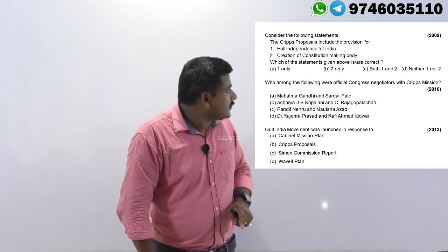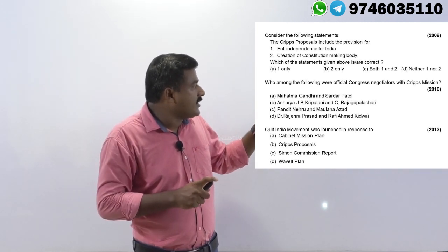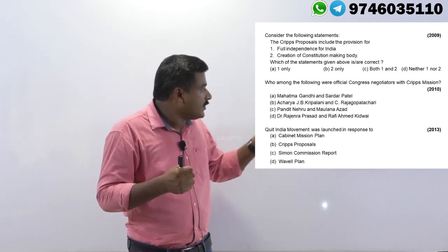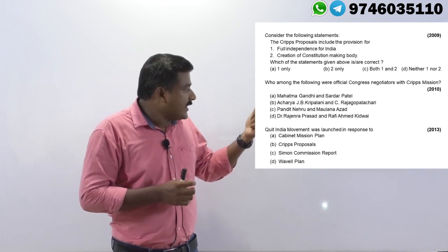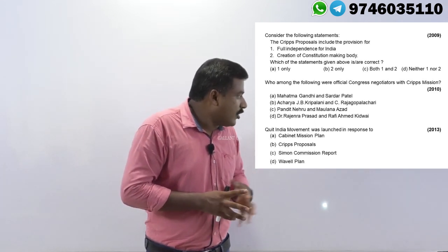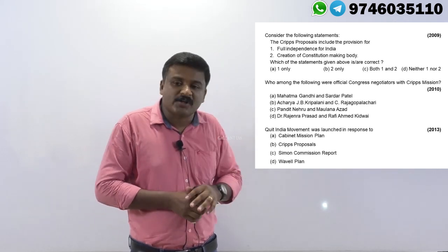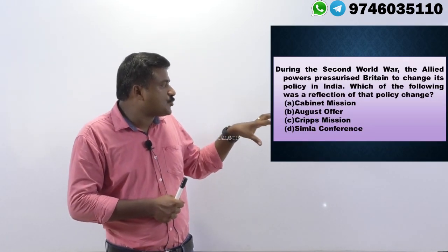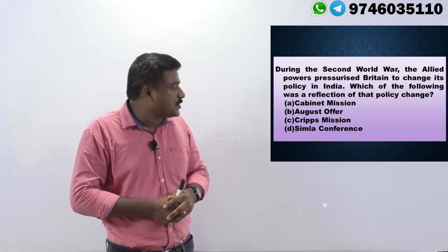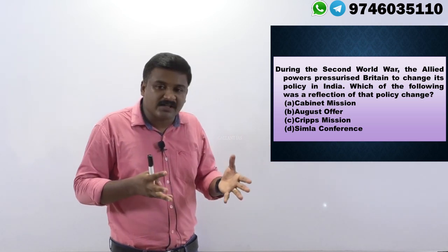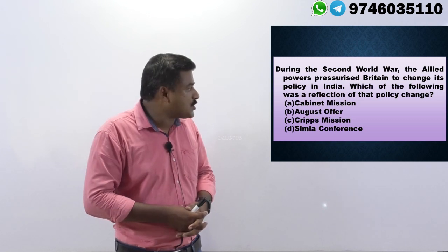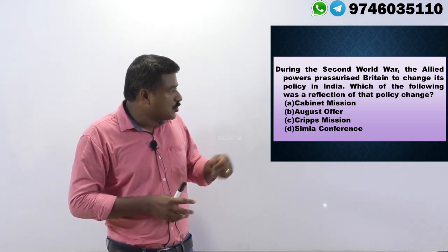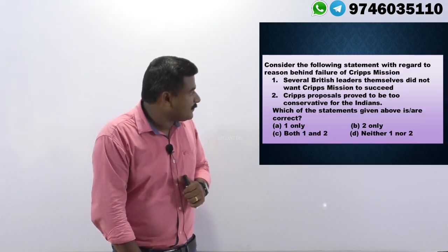Which Prime Minister sent the Cripps Mission to India? Winston Churchill. Cripps proposals included the provision for 'full independence for India' — no, only Dominion status — and 'creation of a constitution-making body' — yes. Who were the official Congress negotiators? Pandit Nehru and Maulana Azad. The Quit India Movement was launched in response to the failure of Cripps proposals during the Second World War. Allied powers like USA, USSR, and China pressurized Britain — the reflection of that policy change was the sending of Cripps Mission.